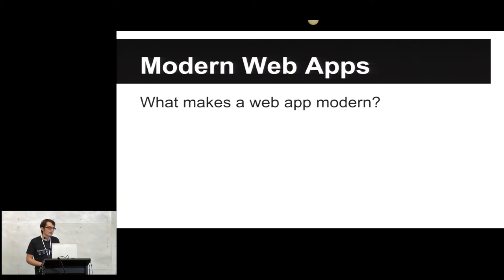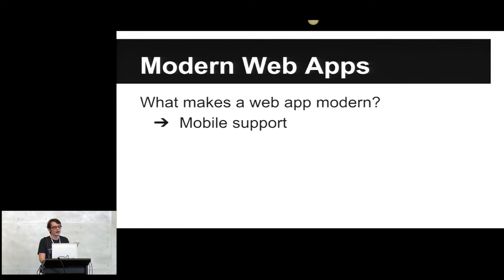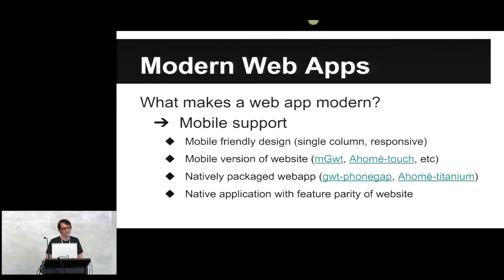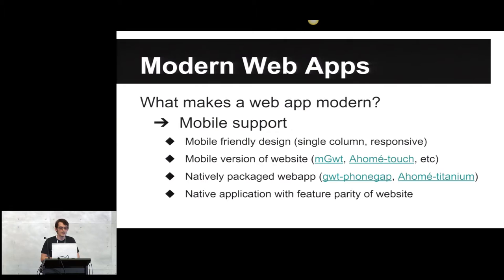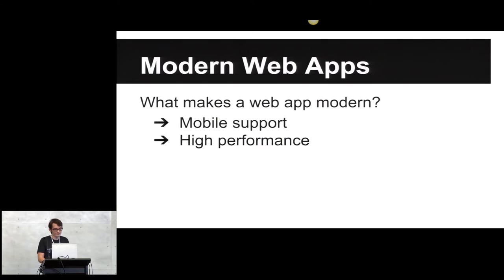I want to talk first about what makes a regular web app modern, because that's at the core of what a modern GWT application is trying to do. Mobile support is really number one for a modern app. If you're not supporting mobile, you're missing about half of your clients. You can make your regular layout very simple and clean. Polymer elements are very intuitive — if you create a drawer element, it will collapse for mobile and you get that for free. And then the native application with feature parity of the website — that's actually what we do at Appian, and we found it works quite well.